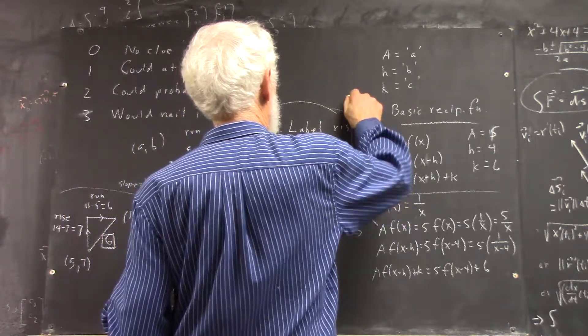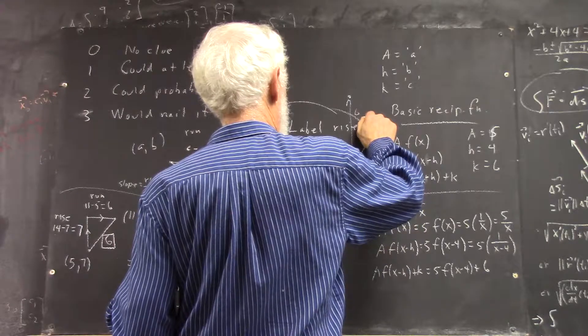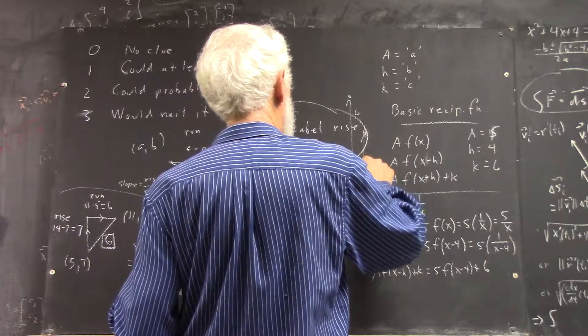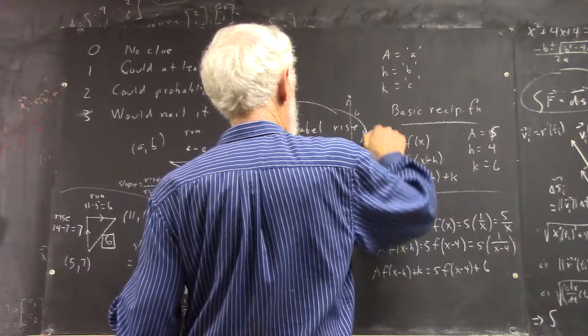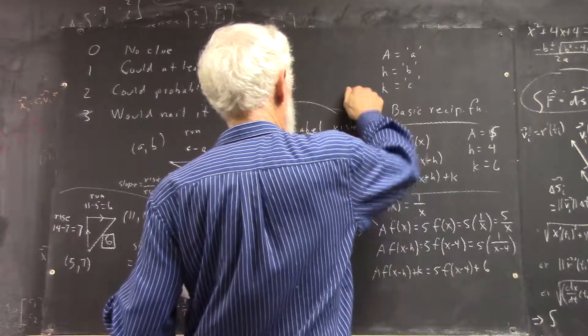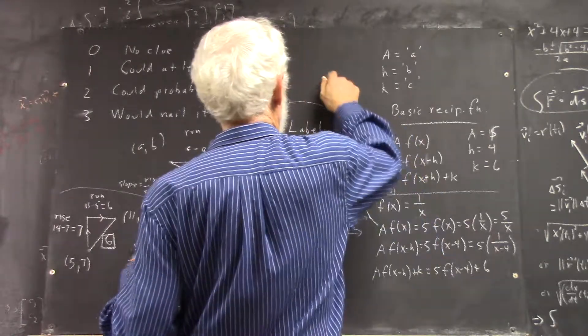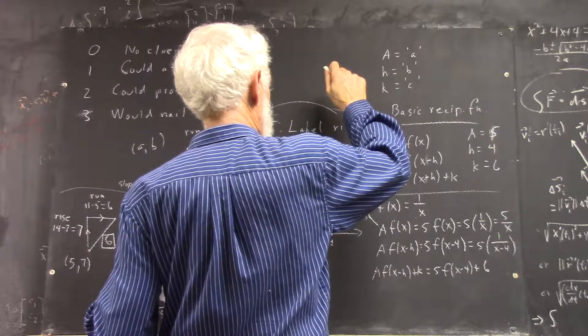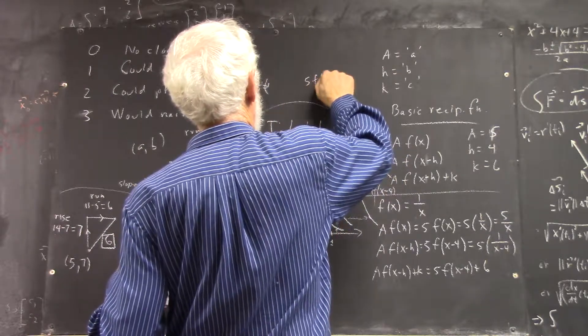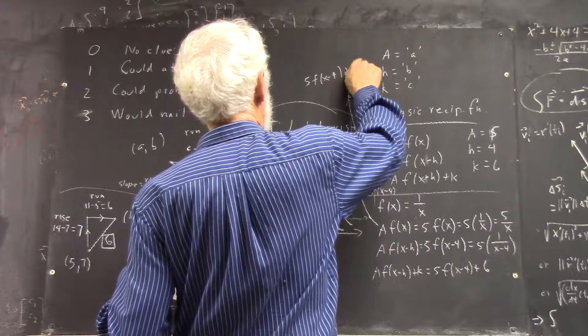So that's going to move us up 6. This is going to move us up 6. And this point's going to move up 6, and we're going to have a graph that's up here. So here's 5 f of x minus 4 plus 6.